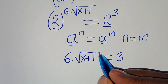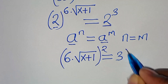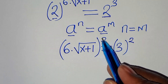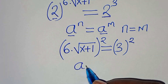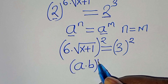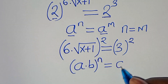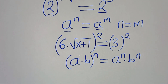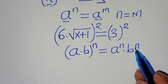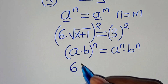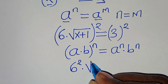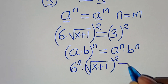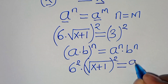So the next step is to square both sides. The expression square root of x plus 1, raised to the power of 2, is in the form of a times b raised to the power of n, which can be expressed as a to the power of n times b to the power of n. Applying this exponent property, we have 6 squared times square root of x plus 1 squared, this is equal to 3 squared, which is 9.